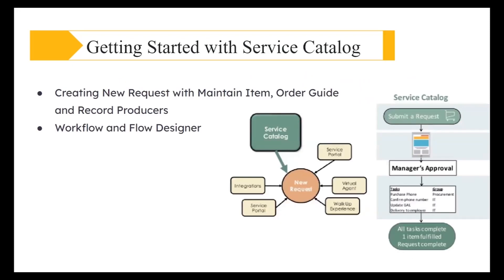Next, we are going to see another important concept around service catalogs. We have three main concepts inside service catalog: one is items — call them maintain items — the second one is order guides, and the next one is record producer.